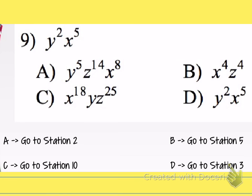Here's question 9 — it shouldn't take more than 30 seconds. Sometimes knowing the answer when you don't have to do any work is just as important as knowing how to do the work. It just says Y²X⁵. It equals itself. That was a no-brainer.